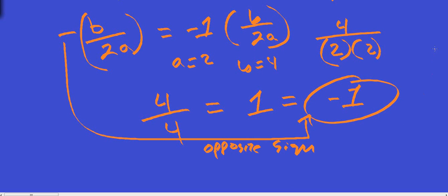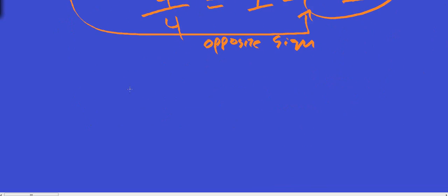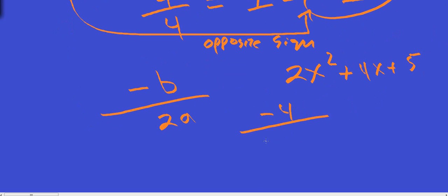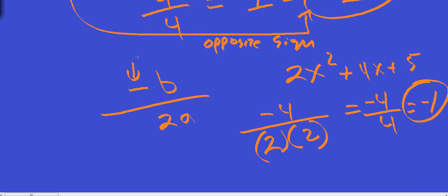You could carry that through if you wanted. For example, we could have done negative b over 2a, and we had 2x squared plus 4x plus 5. So you could have done negative 4 over 2 times 2, which would give us negative 4 over 4, which is negative 1. Either way, I just like to think of this as taking the opposite sign. Let's look at another example.